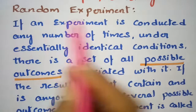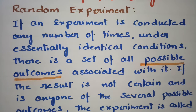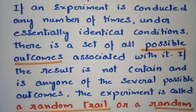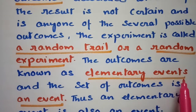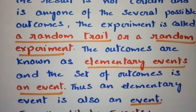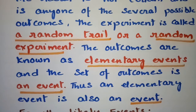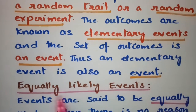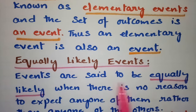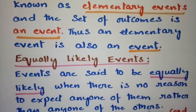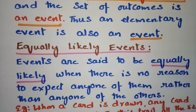To recap: in a random experiment, the set of all outcomes associated with it forms a random trial. The outcomes are known as elementary events, and the set of all outcomes is an event; thus an elementary event is also an event. For equally likely events, when there is no reason to expect any one outcome over another, whatever result comes is an equally likely event.